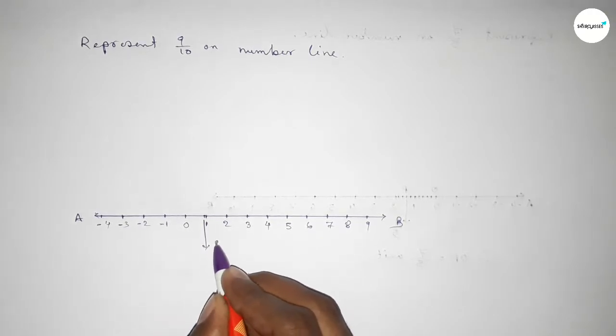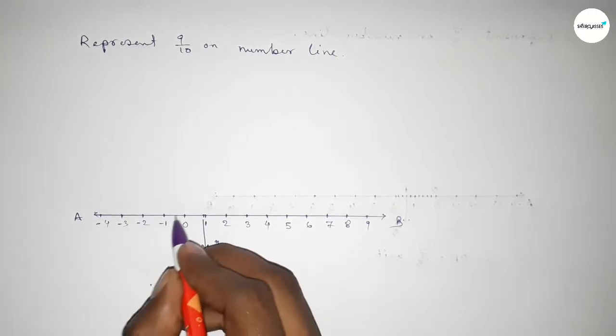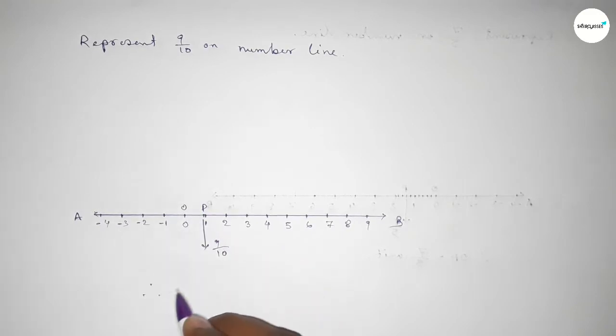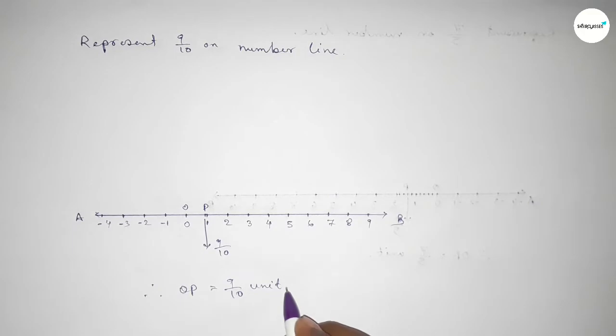So this is 9 over 10 on the number line, and this is O and P. So therefore, OP equals 9 over 10 unit. That's all, thanks for watching. If this video is helpful to you, then please share it with your friends. Thanks for watching.